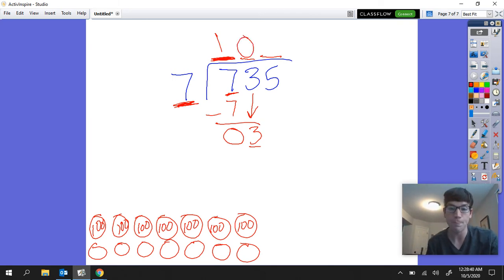I'm going to say that zero tens would fit in each group. But I do have some ones, so now we're in the ones place. We have 35 total ones to split up and we have seven groups to split them up into.